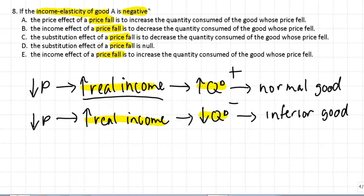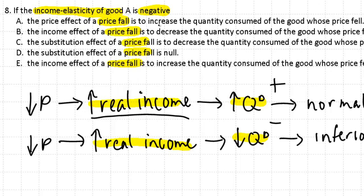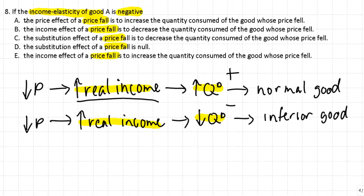Let's look at the answers. The first one is talking about the 'price effect' of a price fall — but most books talk about the substitution effect and the income effect, not a price effect. So we can eliminate that. The next one says the income effect of a price fall is to decrease the quantity consumed of the good whose price fell. That sounds right: if the price falls and your real income goes up, you buy less of this item — that's the inferior good. So this looks like our answer.